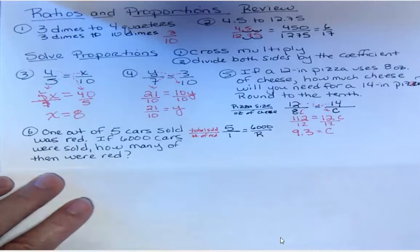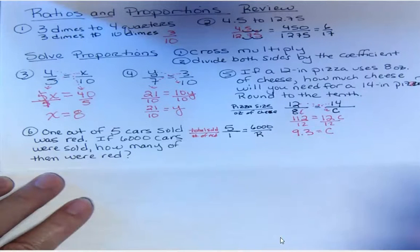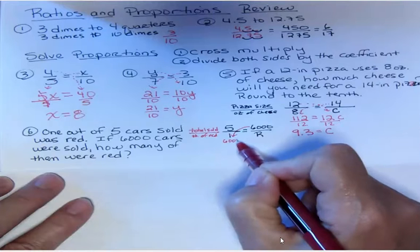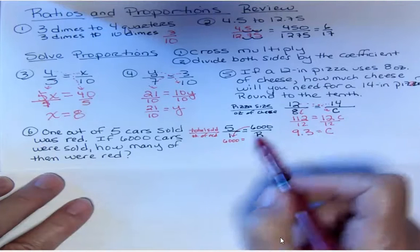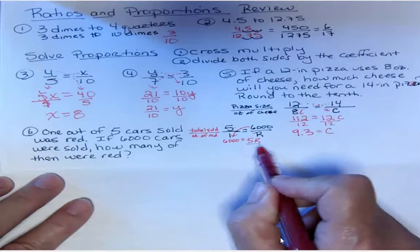Now if I cross multiply here, 6,000 times 1 is 6,000, and 5 times R is 5R.